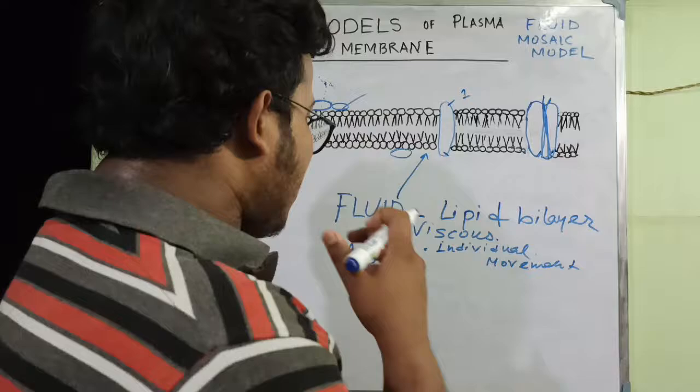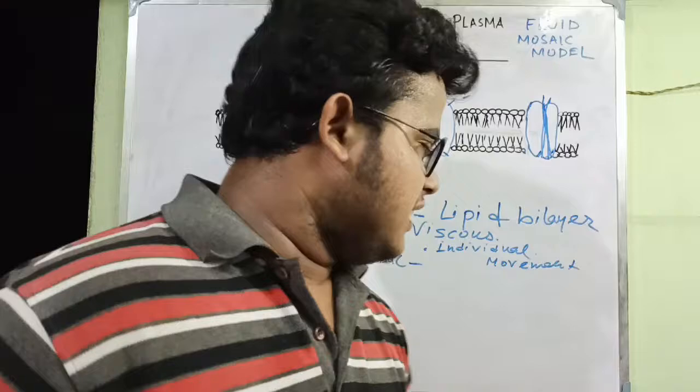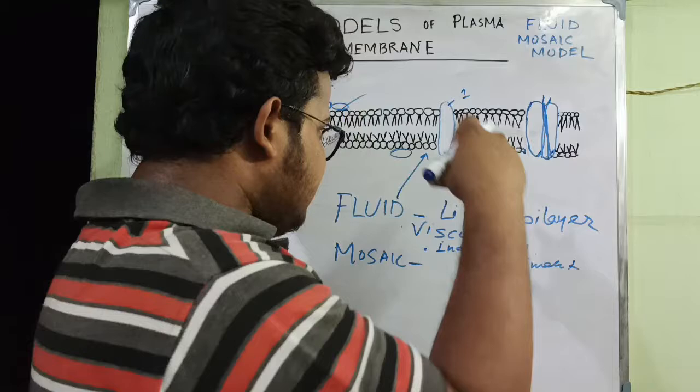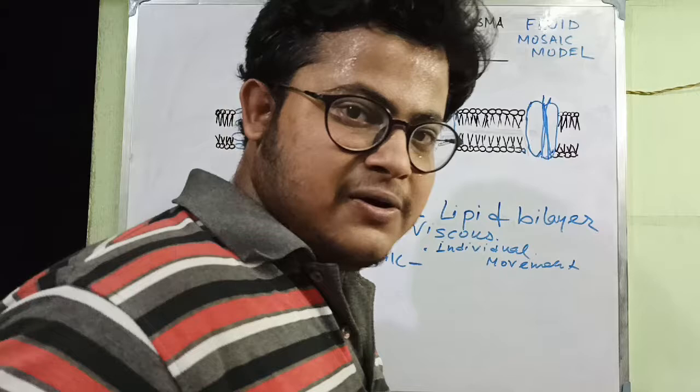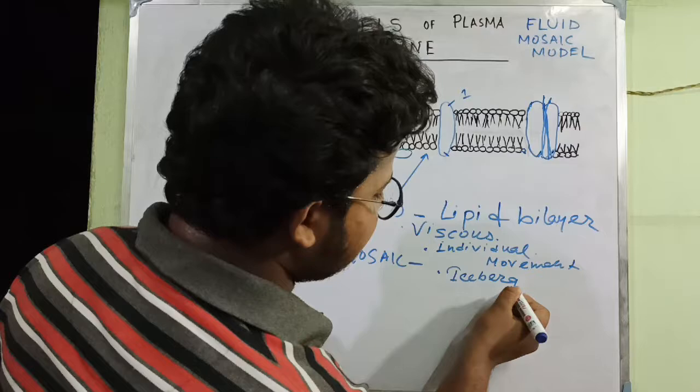Mosaic refers to how proteins are present within the cell membrane. According to Singer and Nicholson, mosaic means that proteins are embedded in the plasma membrane like icebergs in water.